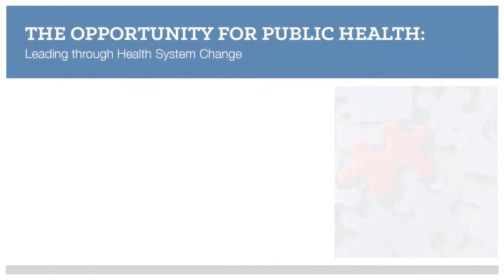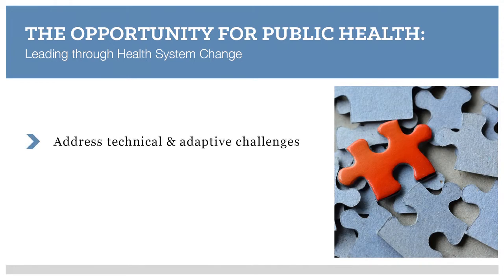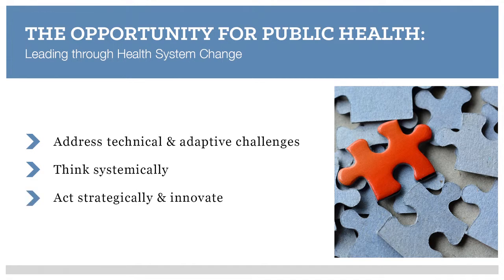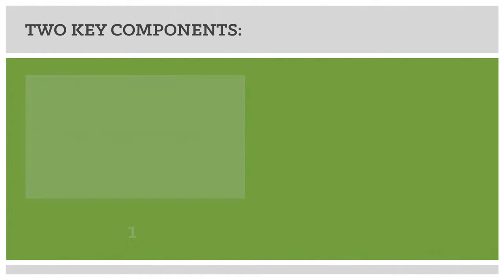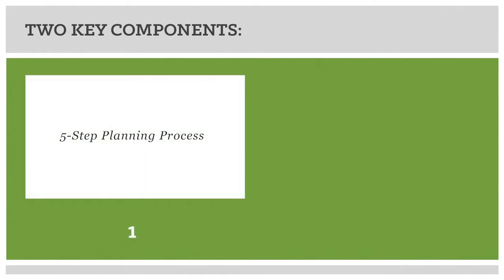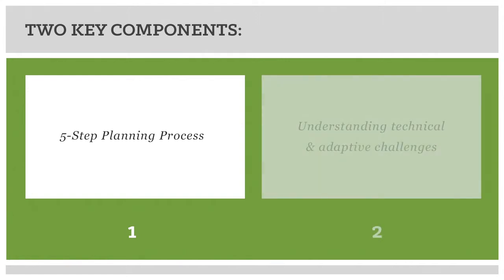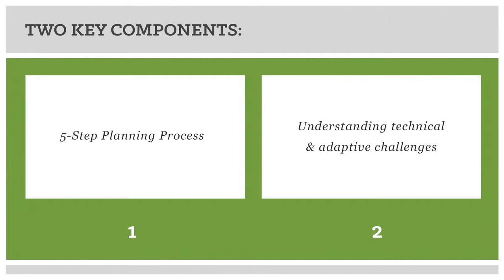The Leading Through Health System Change Planning Tool is a roadmap for public health practitioners to navigate the technical and adaptive challenges of the ACA. It is intended to heighten your learning capacity and leadership skills in relation to health reform and health system transformation. Central to this tool are two key components. The first is a five-step planning process, fundamental to helping your team focus on actions that lead to innovation and strategic thinking. The second is understanding technical and adaptive challenges—technical challenges are solvable, while adaptive challenges have no expert and no ready answer. Learning to use both together is important to responding to this opportunity for change.